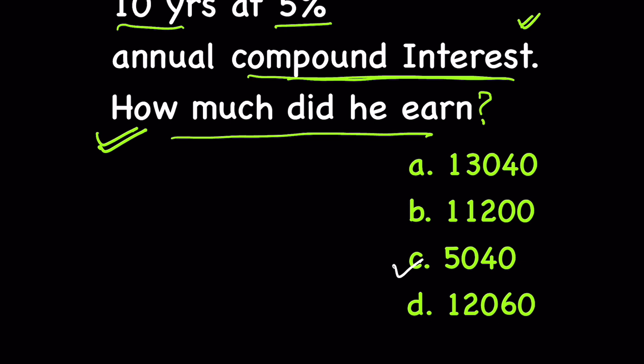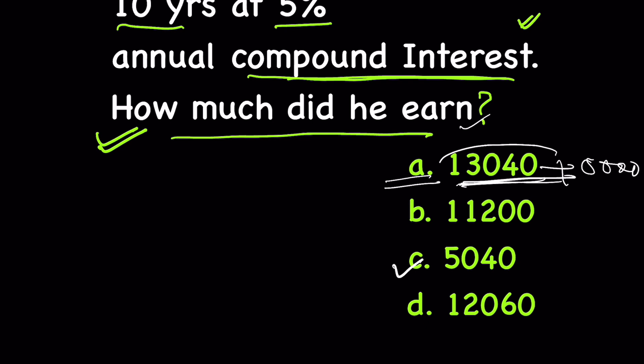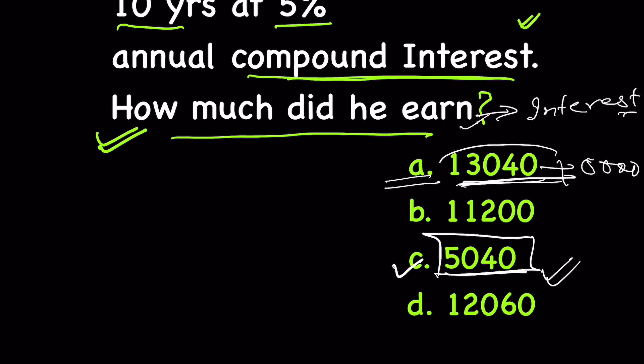You might take $13,040 as your answer if you are in a hurry, but that would be wrong — because the question asks how much did he earn, not how much did he receive. The $13,040 includes the $8,000 he originally invested. So his earnings, or profit, is 13,040 − 8,000 = $5,040. That is the interest he earned — the answer is C. Hope you understood compound interest! Like and subscribe, thanks for watching.